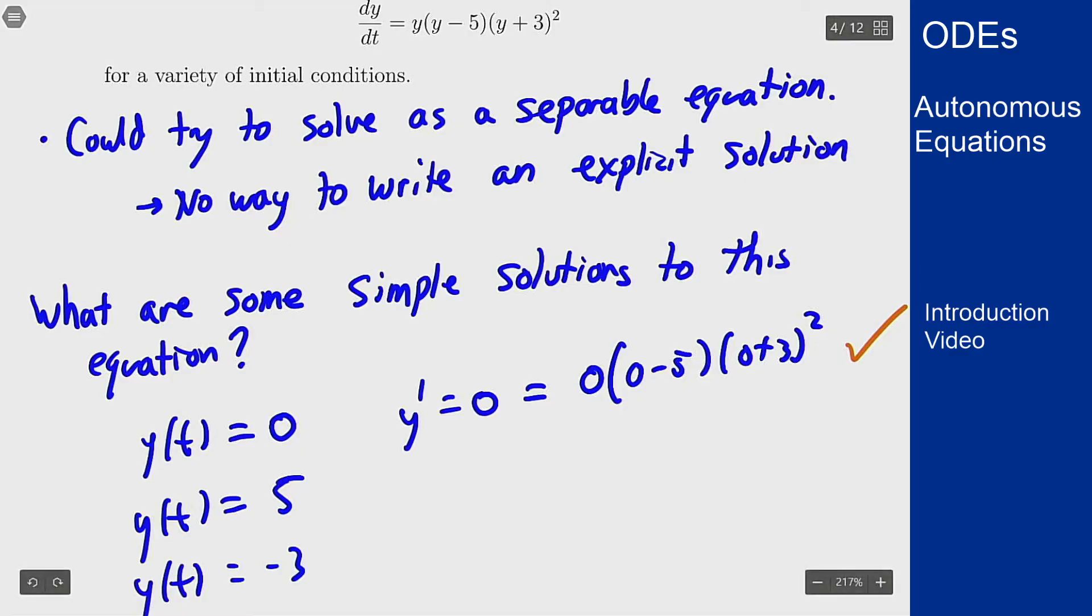Because this side only depends on y and not t I'm allowed to pick constant values like this that will make that right hand side be 0 and they become solutions as constant functions. So these particular solutions here are what are called equilibrium solutions to this problem.